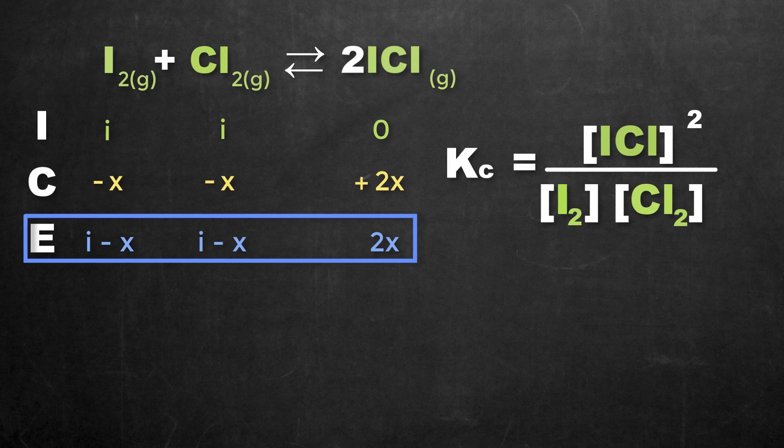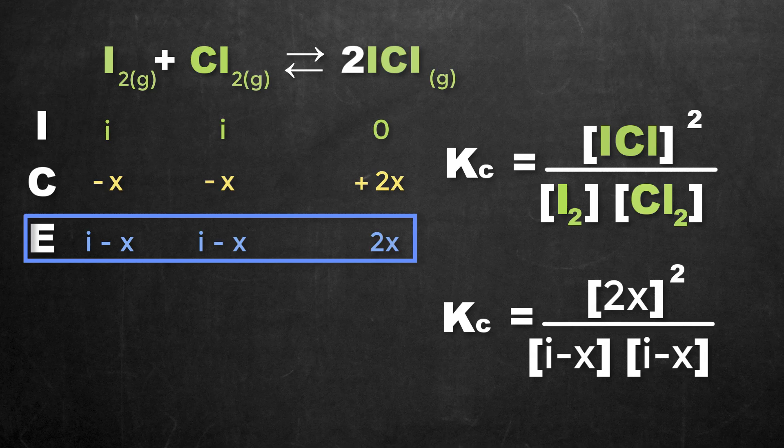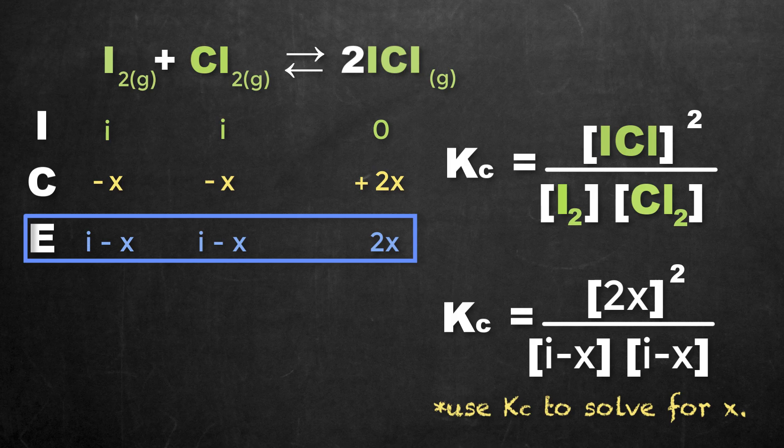And now, since this is an equilibrium concentration that we're looking at, we can now sub these values into our equilibrium expression. And if you're provided the value of K, you can now utilize that to figure out your concentration change, or your X value.